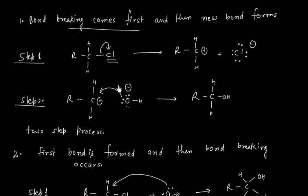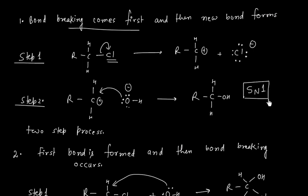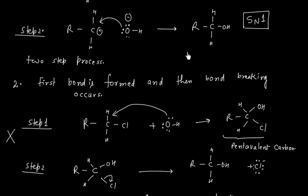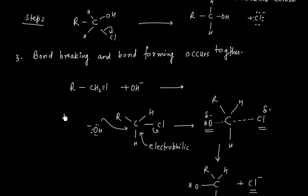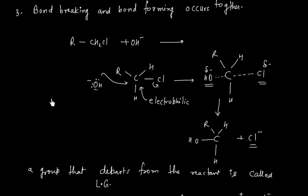The possibility where bond breaking comes first and then the bond forms is called an SN1 reaction. The class of reaction in which bond breaking and bond forming occur together is called an SN2 reaction.